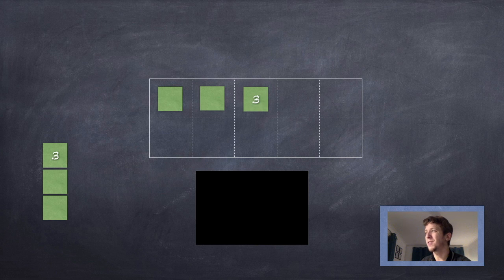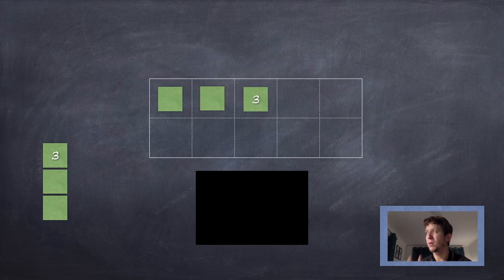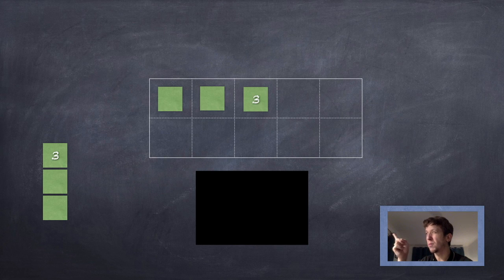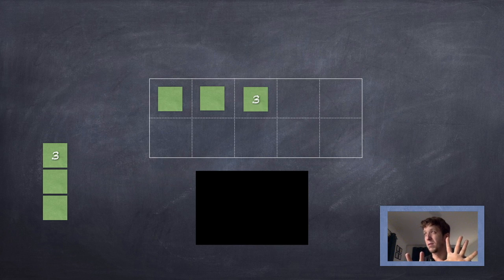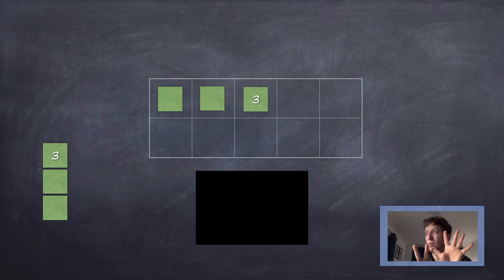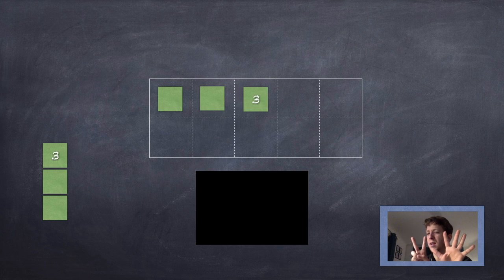But we can make it easier for ourselves because we know that in a ten frame, there's five on the top row and five on the bottom row. So, on that top row, there's two empty spaces. And the bottom row is completely empty. So that's five. So five and two more. Five, six, seven. We need seven.